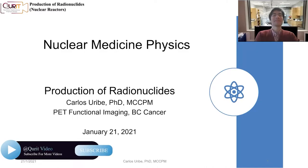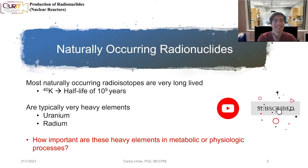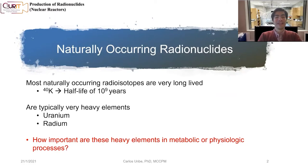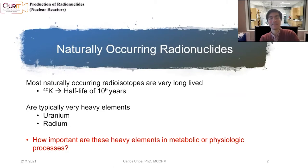We're going to start lecture number four of this course today, talking about production of radionuclides. What we see in nature is that most naturally occurring radioisotopes are very long-lived. For example, potassium-40 has a half-life of 10 to the 9 years, and they're typically very heavy elements like uranium and radium. A question to think about: how important are these heavy elements in metabolic or physiologic processes in the body?